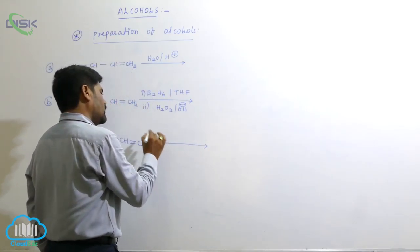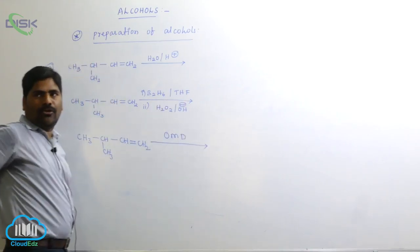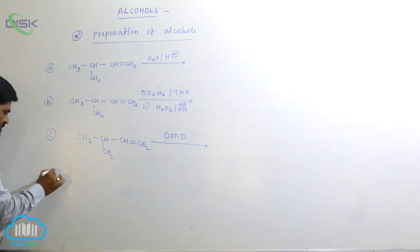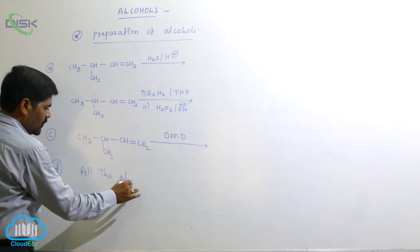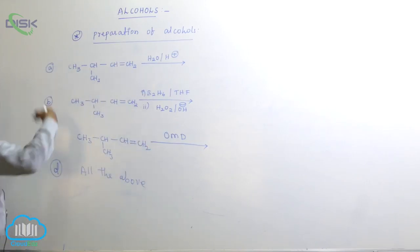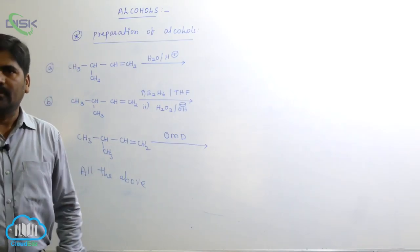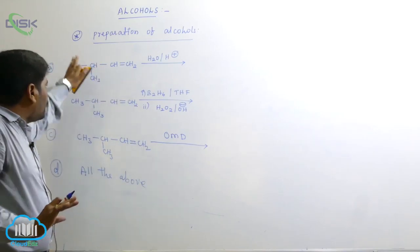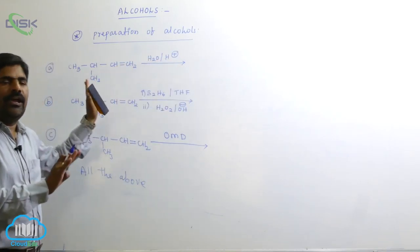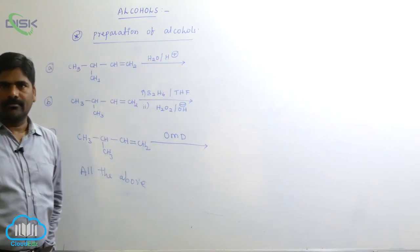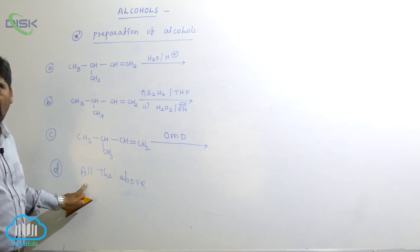Reacting with OMD — oxymercuration and demercuration. The last option D is all the above. The question is: in which of the following reactions is a rearranged product formed? Options are: A (first), B (second), C (third — OMD), and D (all the above).